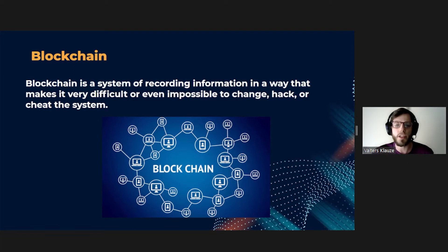Blockchain is distributed across a network of computer systems. Each block in the blockchain contains a certain amount of transactions. And every time a new transaction happens on the blockchain, a record of that transaction is saved in the participant's computer system. Because of that, if one block in one chain was changed, you will immediately notice it. If someone wants to hack the blockchain system, they would have to change every block in the chain across all of the distributed versions of the chain.